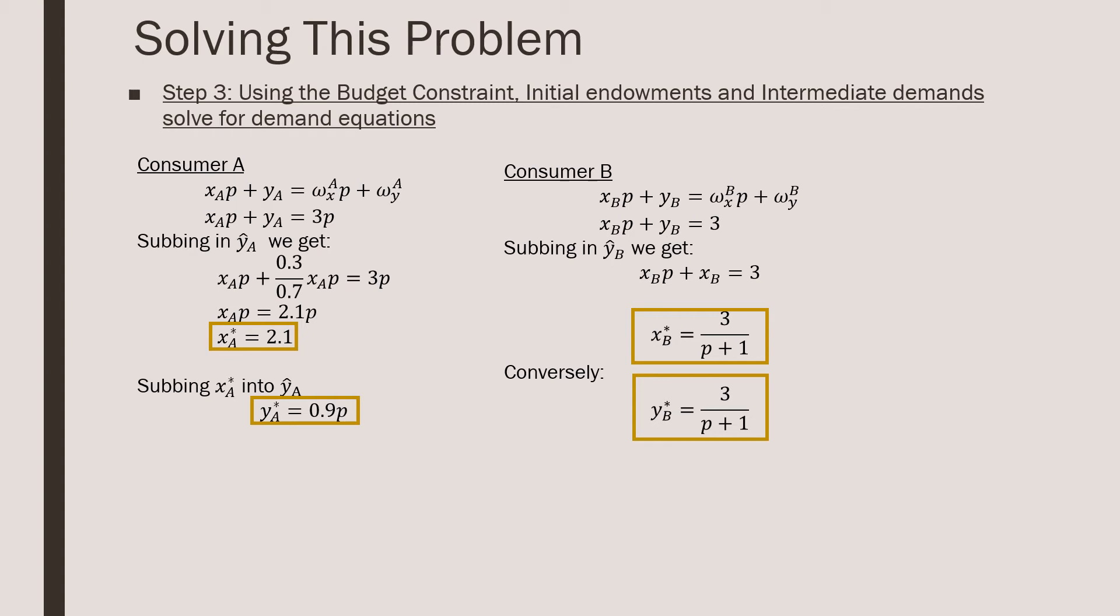For consumer B, following the same sort of procedure, we just sub in xB because of the no waste condition for yB, and we get this result for both of the answers, which is going to be 3 all over p plus 1. That's going to be the demand equations for both x and y.